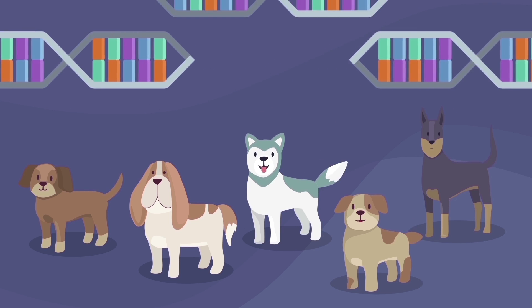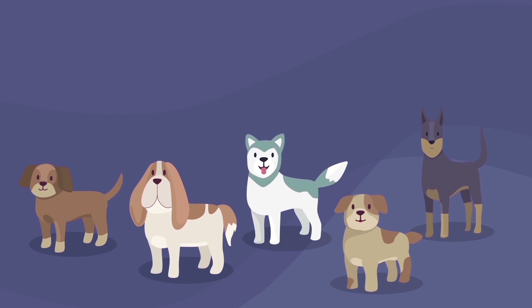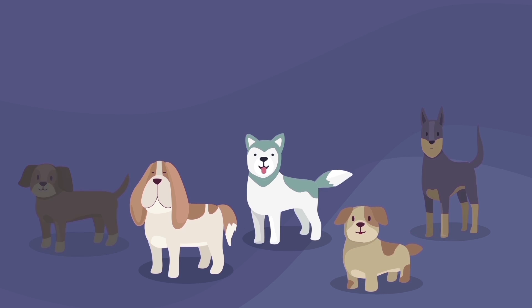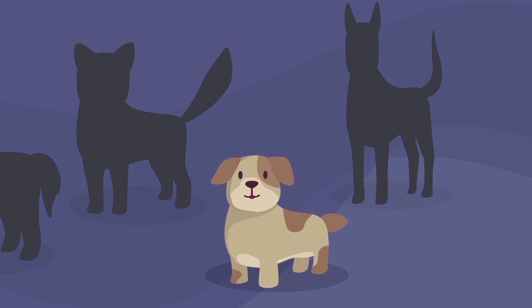The protein encoded by this gene is called the fibroblast growth factor receptor. Mutations in this gene led to a variety of skeletal developmental disorders, including shortening of the limbs.